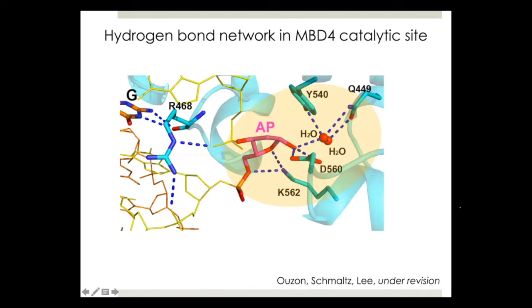What was intriguing was the observation of a hydrogen bond network in MBD4's catalytic site. Around the AP site, there are multiple hydrogen bonds. Is this biologically relevant or a random observation? Does this hydrogen bond network have some function in DNA glycosylase activity?